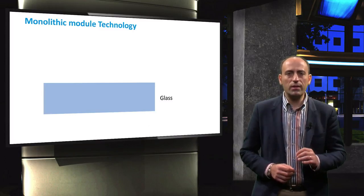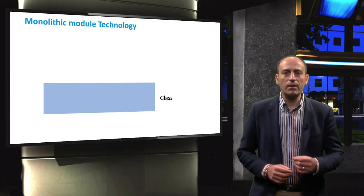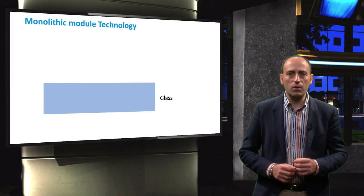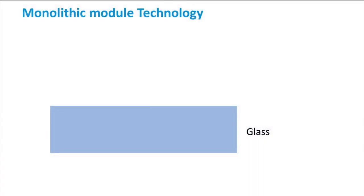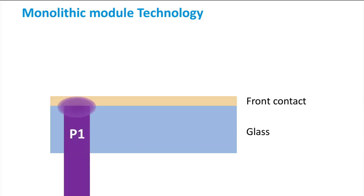To illustrate these laser scribing steps, we will look at this thin-film solar cell deposited in a superstrate configuration. On top of a glass substrate, the transparent front electrode is deposited. Then, the first laser scribe is performed, called P1. The wavelength of the laser is such that it is transmitted through the glass and absorbed by the front contact. The P1 laser scribing step evaporates the material and leaves a gap in the front contact.